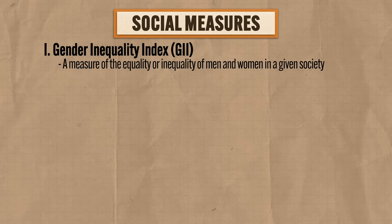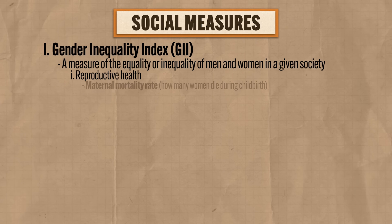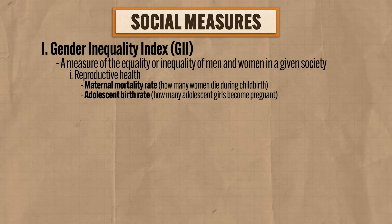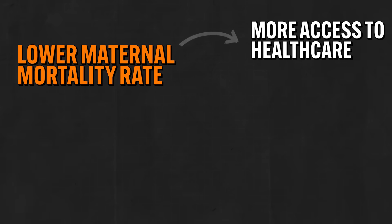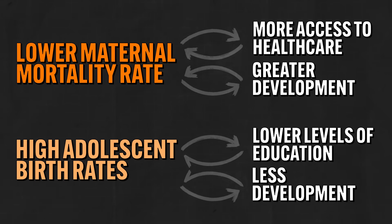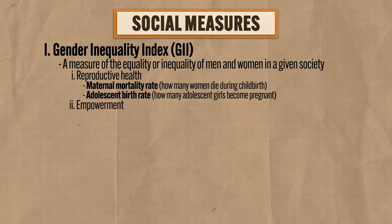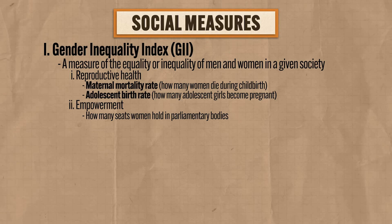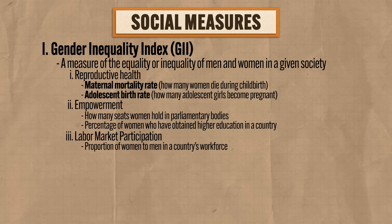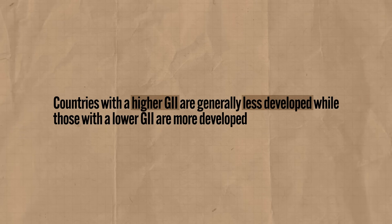There are three components that go into the overall measure of the GII. First is reproductive health, which includes the maternal mortality rate — how many women die during childbirth — and adolescent birth rates. Lower maternal mortality indicates more access to healthcare and thus greater development, while high adolescent birth rates indicate lower levels of education and less development. The second component is empowerment, which measures how many seats women hold in parliamentary bodies and the percentage of women who have obtained higher education. The third component is labor market participation, which measures the proportion of men to women in a country's workforce. Countries with a high GII are generally less developed, while those with a lower GII are more developed — it's an inverse relationship.